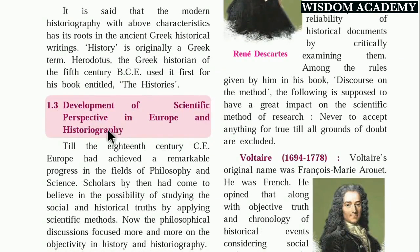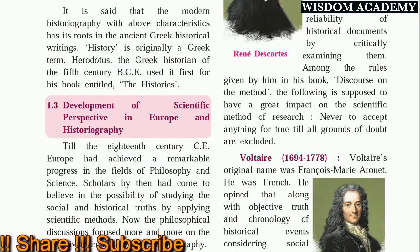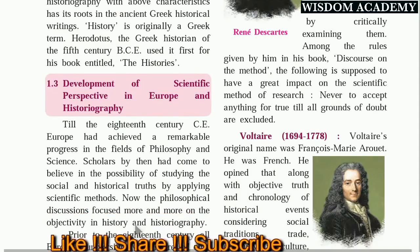Regarding the development of scientific perspective in Europe and historiography: till the 8th century CE, Europe achieved remarkable progress in philosophy and science. Scholars came to believe in the possibility of studying social and historical events by applying the scientific method. Before the 8th century, everything ran on assumptions that events happened because of God. As people became educated, they started thinking scientifically and required proof.